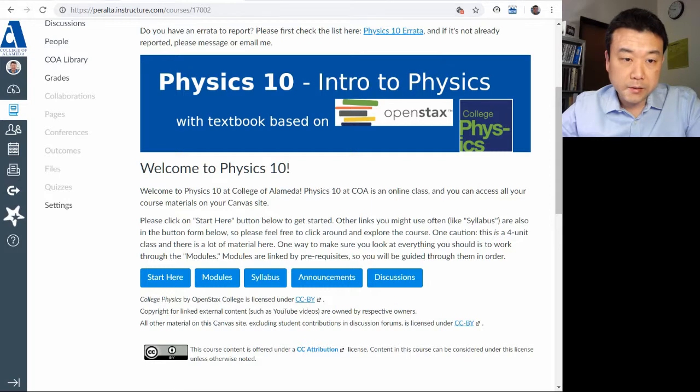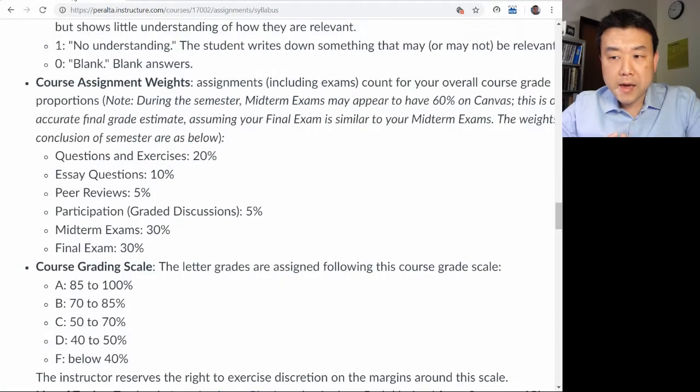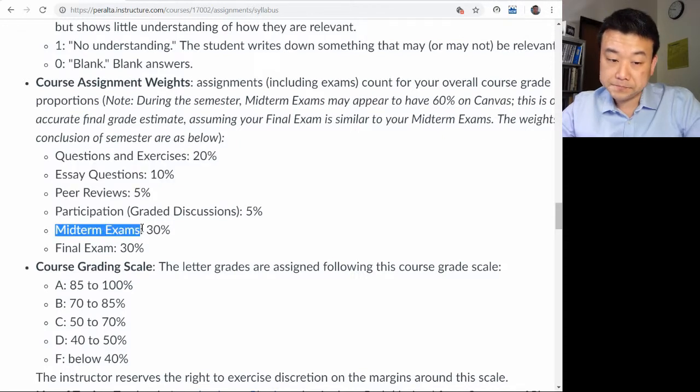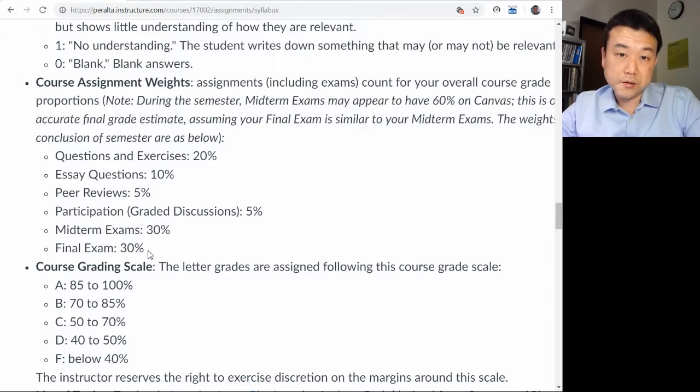So with the first midterm exam, you now have enough information to project how well you have been doing in the class. Your course grade is based on your homework assignment and your exam. Now that all the major categories are in, you have some sense of how well you have been doing, and assuming that you will continue to do as well as you have been doing, you can project what your final grade might be.